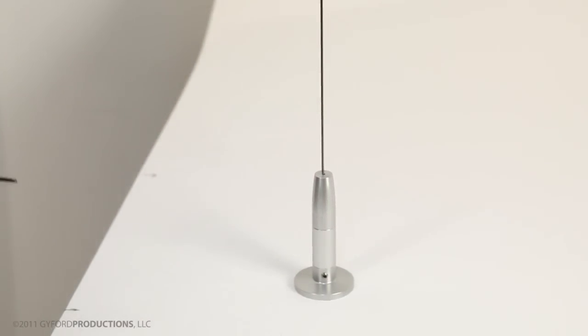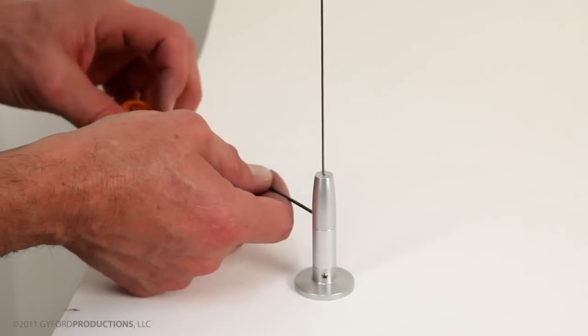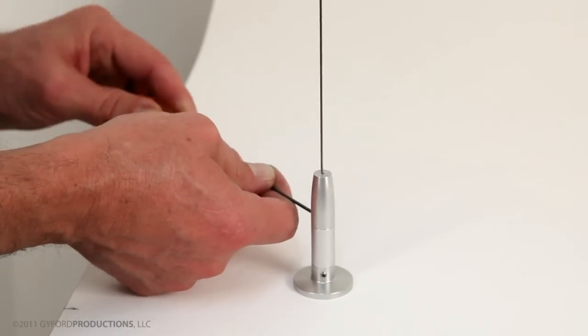The last step, again, is to set the set screw at the base against the threads and prevent the turnbuckle from backing off on you.